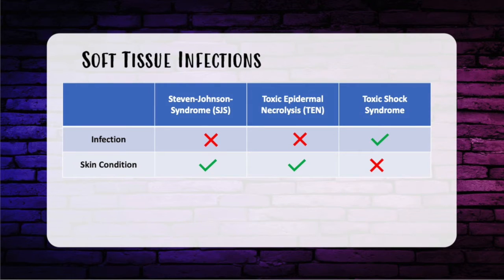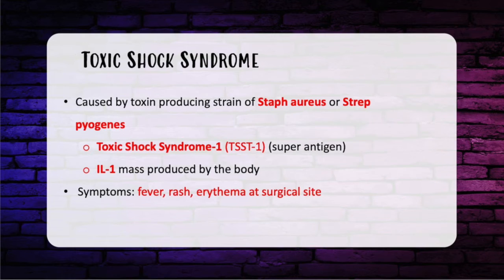Let's focus on specific infections and skin conditions. Let's compare Steven Johnson Syndrome versus Toxic Epidermal Necrolysis, or TEN, versus Toxic Shock Syndrome. Only Toxic Shock Syndrome is associated with infection. Think of a patient who just had an implant or tissue expander placed, and now has systemic symptoms like fever and a rash or erythema at the surgery site.